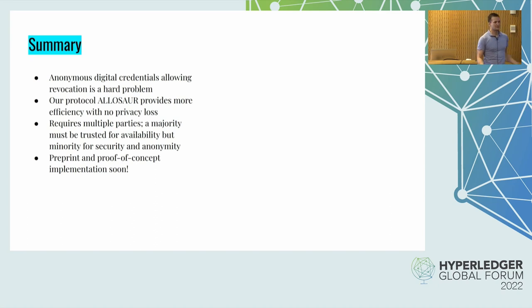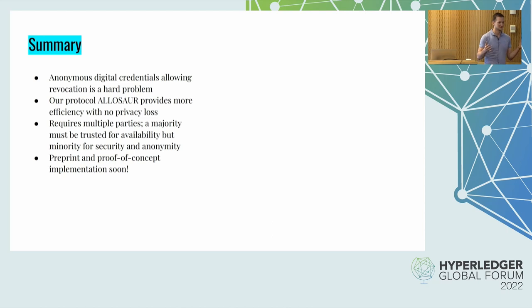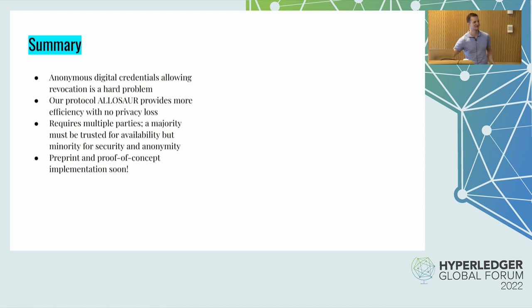Hopefully I've convinced you that anonymity and efficiency are a hard problem to compromise on. Our protocol provides more efficiency, and the main way it accomplishes this is through multi-party computation. I was hoping to link to a preprint and a proof of concept, but we have a massive UC-style security proof — over 100 pages — and it turns out this is a bigger task to finish than I had originally thought. So, coming soon is all I can say.